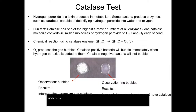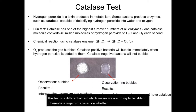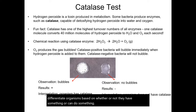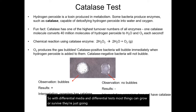Welcome back to Lab Unit 2. This video is going to talk about the catalase test. This test is a differential test, which means we are going to be able to differentiate organisms based on whether or not they have something or can do something. With differential media and differential tests, most things can grow or survive — they're just going to behave differently.